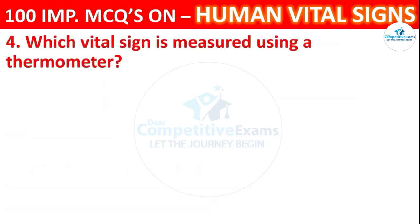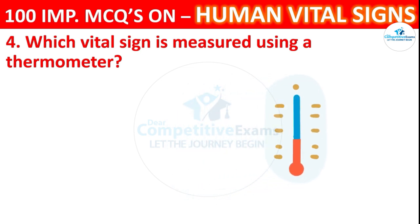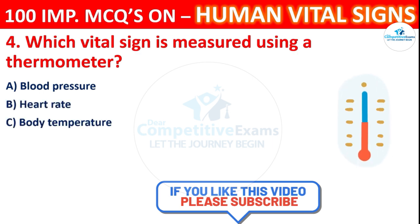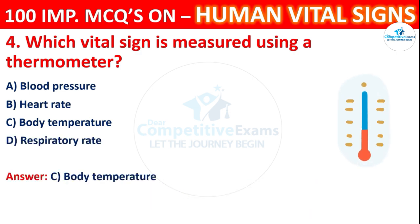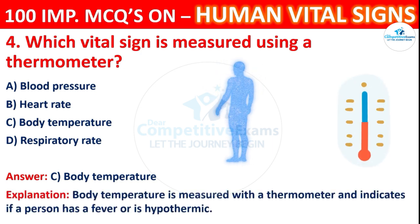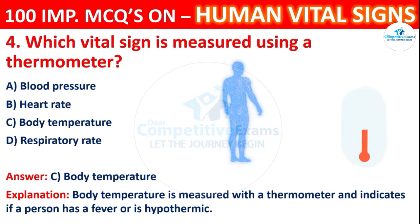Question 4: Which vital sign is measured using a thermometer? Options: blood pressure, heart rate, body temperature, or respiratory rate. The correct answer is C, body temperature. Body temperature is measured with a thermometer, and it indicates if a person has a fever or is hypothermic.